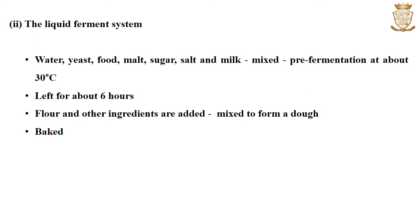The next system is the liquid ferment system. In this system, water, yeast, yeast food, malt, sugar, salt and milk are mixed during the pre-fermentation at about 30 degrees Celsius for about 6 hours. After this procedure, flour and other ingredients are added and mixed to form the dough, and then it is further baked.